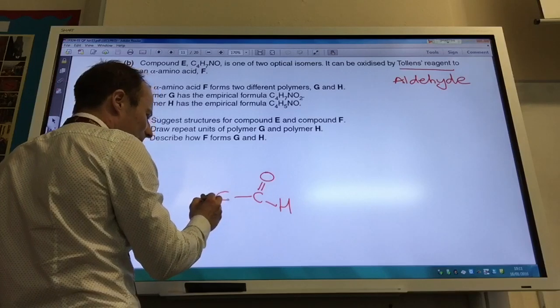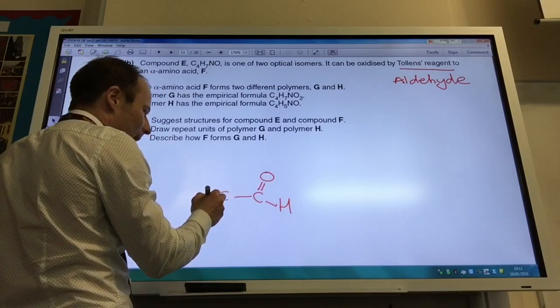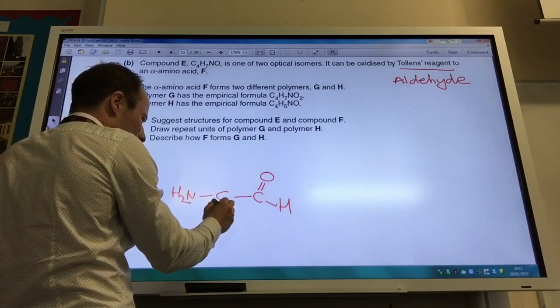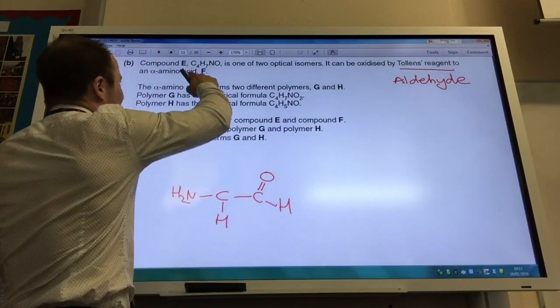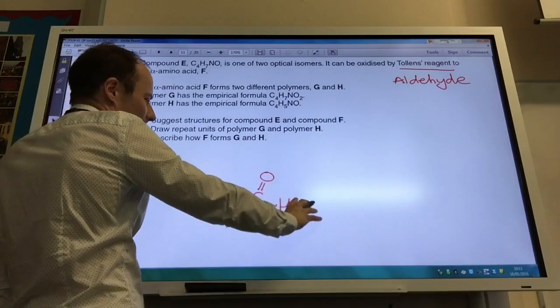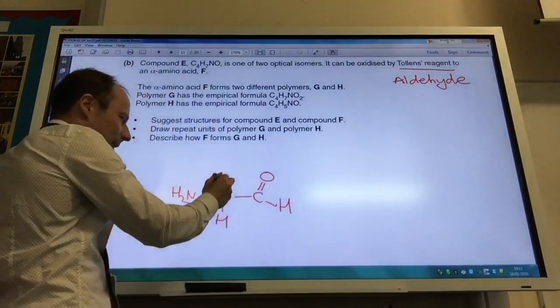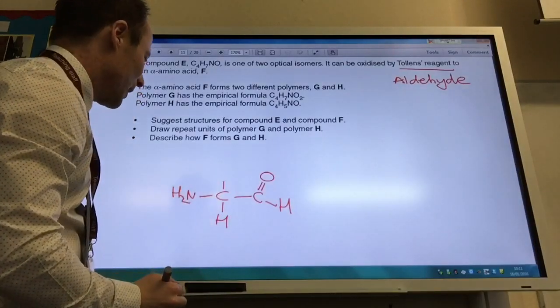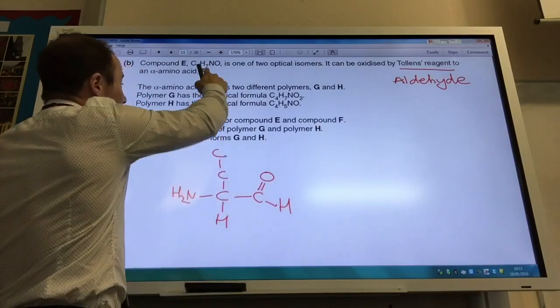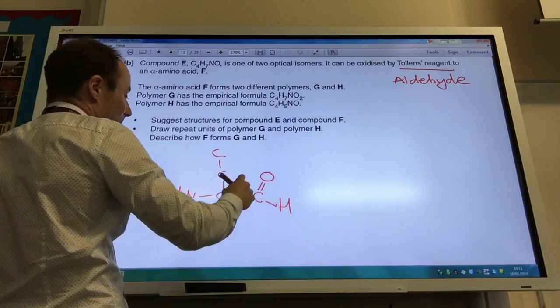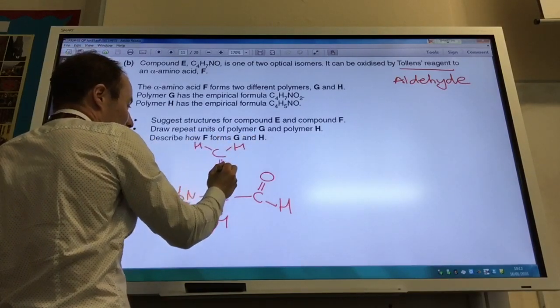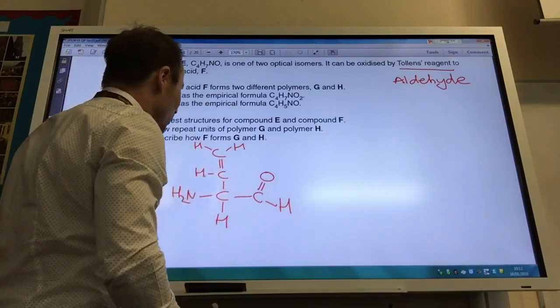I've then got four carbon atoms. Remember it is an alpha amino acid, which means I've got to start with that group there. Because they told me it forms an alpha amino acid only by oxidizing that to an acid group. So I've got to start with that basic structure. I've just got to work out the R group coming off here. How many carbons have I used so far? Two, but I've got another two to do. I've used my N up there. I've used my O, so I can only play around with carbons and hydrogens now. How many have I got left over? Well, I've actually got three hydrogens left over, which means I have that.